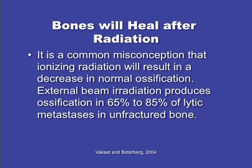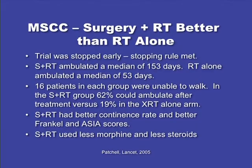As we go to higher and higher doses, this becomes a more interesting question. We know that when neurological symptoms are involved, we're going to be a lot more dependent on surgery. This is the PATREL study that everybody is probably familiar with, showing that patients who underwent surgical resection followed by radiation did much better than those who underwent radiation alone — in terms of ambulation, regaining the ability to walk, better Frankel and ACES scores, as well as requiring less pain medication and steroids.